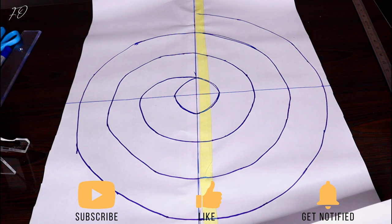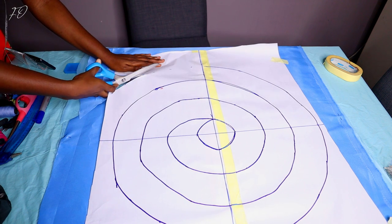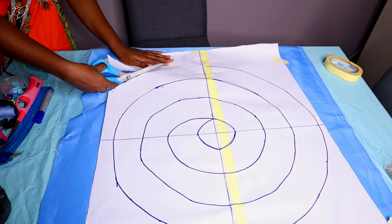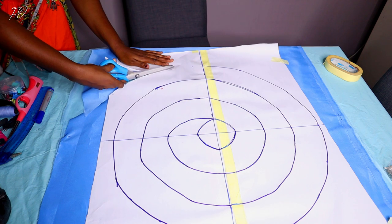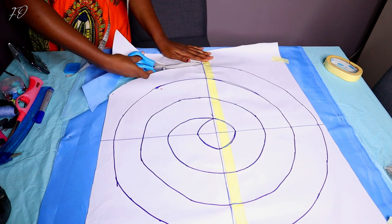All right, guys. So it's time for me to cut off my fabric and I have my fabric. I have two pieces of fabric placed on top of each other. You can decide to fold them on each other or place them on each other. It all depends on you. So all you're going to do now is just follow the spiral and then cut off your fabric.